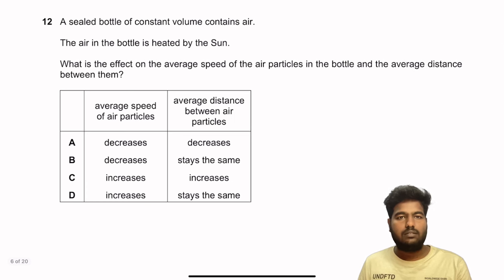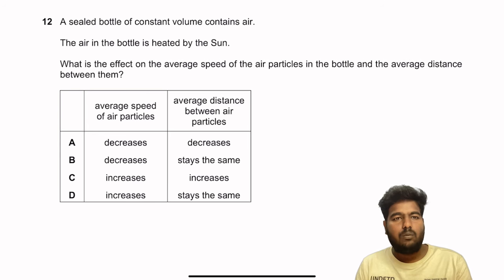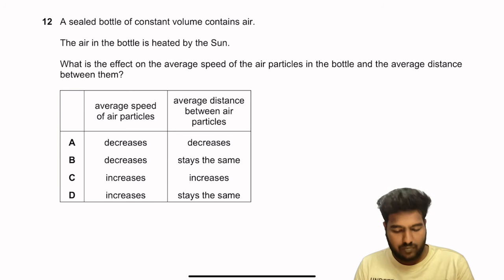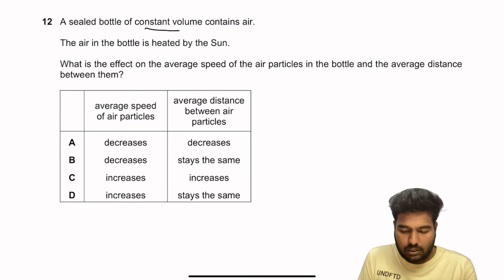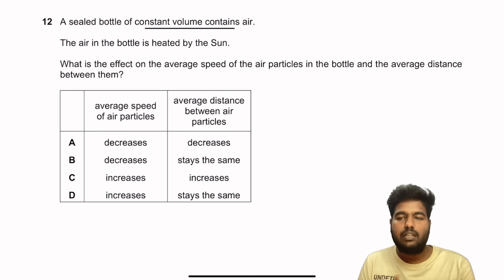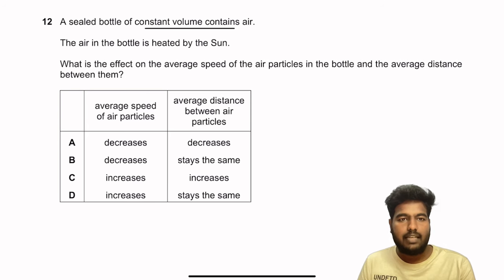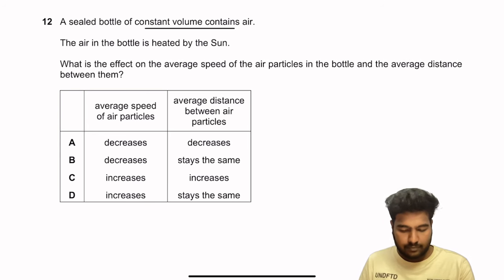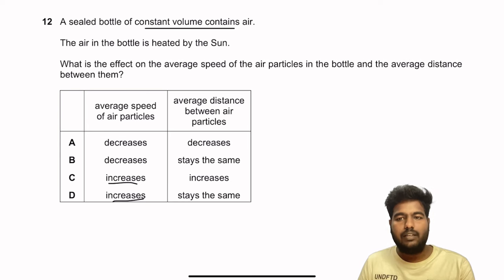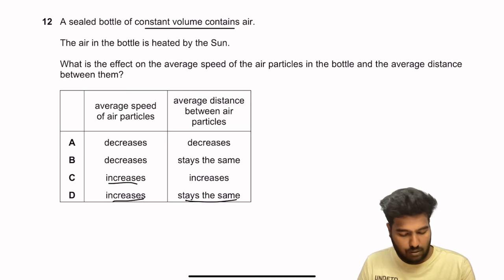Question 12: A sealed bottle of constant volume contains air that is heated by the sun. Since volume is constant, all added heat increases pressure and kinetic energy of particles. The average speed of air particles increases. The average distance between particles stays the same because volume doesn't change. So option D is the right answer.